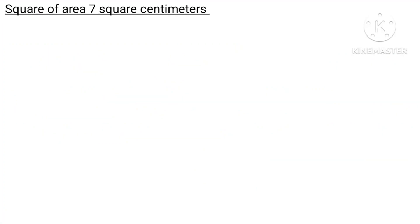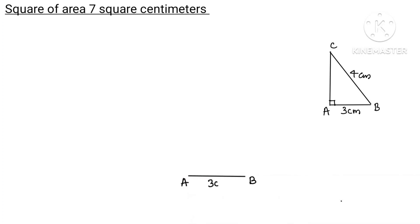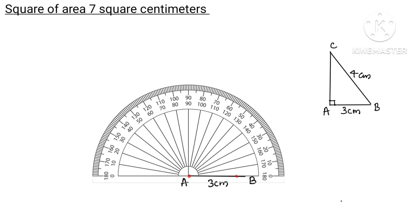The square of area 7 is constructed using this right angle triangle. We label the triangle ABCN. The side AB is 3 cm length — use a ruler to make the 3 cm length. Then we draw AC perpendicular to AB, using a protractor at 90 degrees.